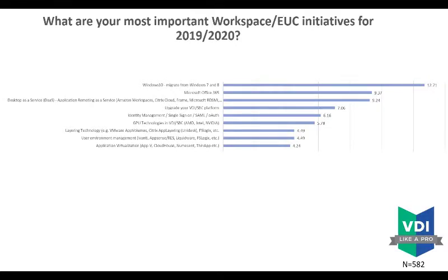You can also see this in the slide showing the most important EUC initiatives: Win10, Office 365 are number one and two. Number three is desktop as a service — Amazon Workspaces, Azure, cloud, Frame, Citrix, RDS/RDSH, modern infrastructure, RDMI, Windows Virtual Desktop — these are high priority for almost 600 survey respondents.